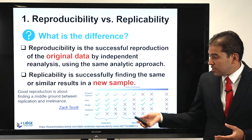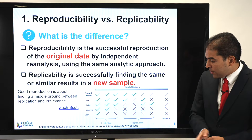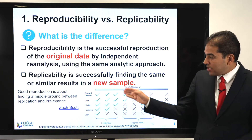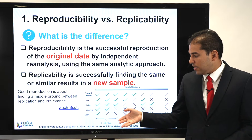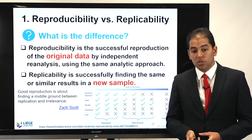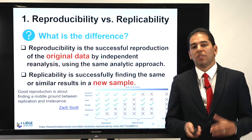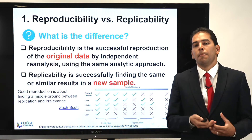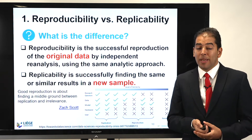As you can see in the work of Zach Scott, he is always trying to distinguish replication and reproduction, basing his criteria on the research question, the data, the model, the hardware, and the user. Those are very important aspects to take into account, and when you are talking about reproducibility you need to be able to distinguish it from replicability.